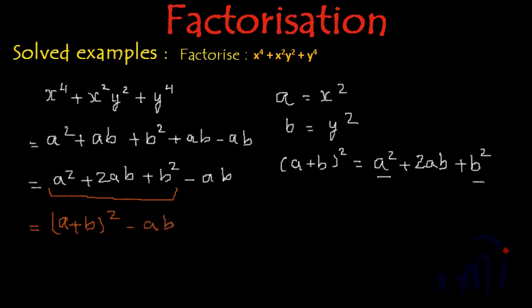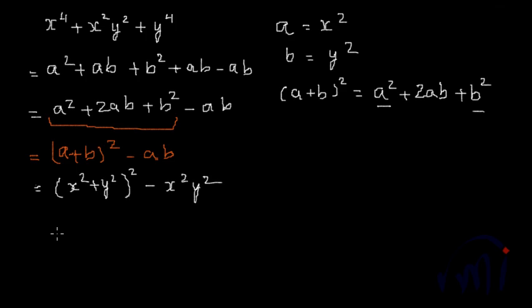And now let's substitute the value of a and b in this expression, so we will get a is x square, b is y square, whole square minus ab is x square, y square.